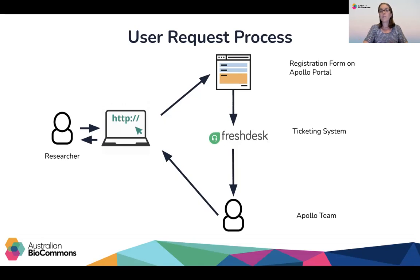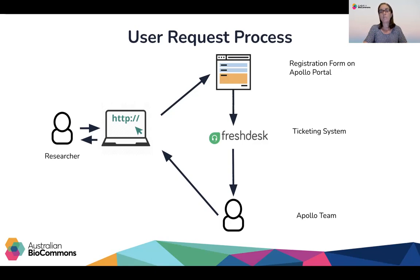The service has evolved to become more automated and secure. To sign up for an instance, a researcher can access our sign-up form on the Apollo portal. The user request process is automated to FreshDesk with separation between the principal investigator and the project administrator or researcher in the group with technical annotation skills. The build of the instance can occur within a week before the team hands over the instance to the researchers. The researcher has control over access to their instance, data upload and public view of the genomes or data on the instance. Regular maintenance and security updates of the system are operated by the Apollo service development team.